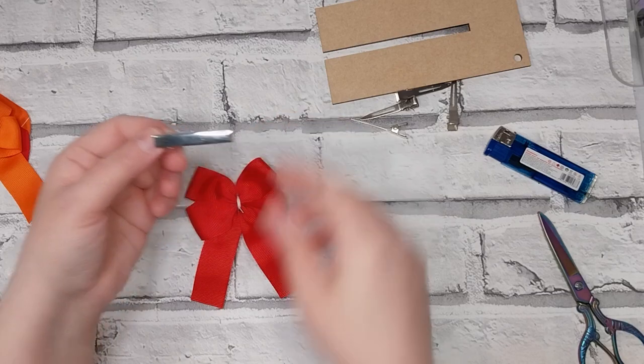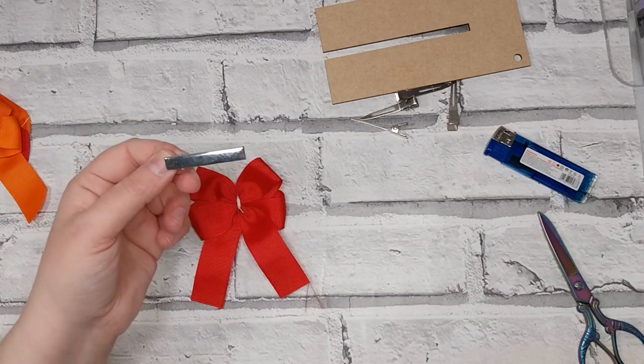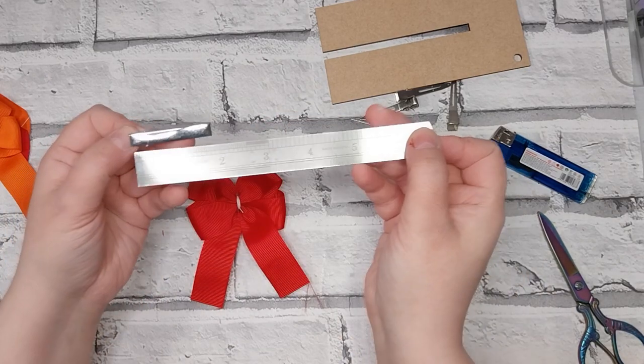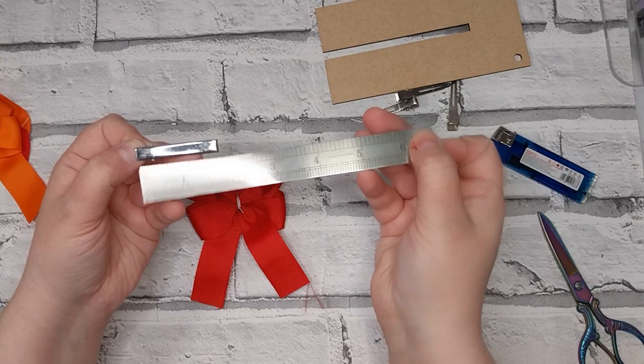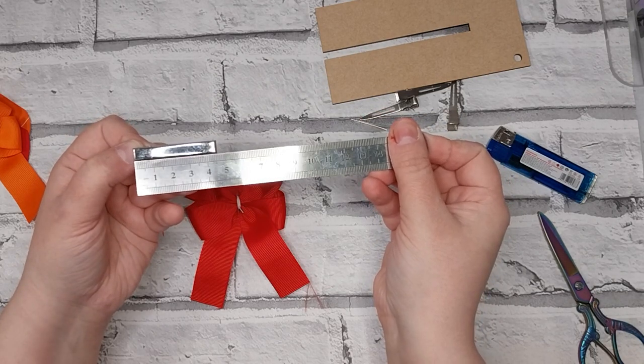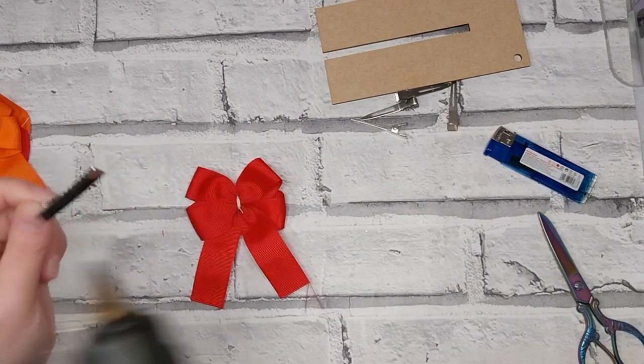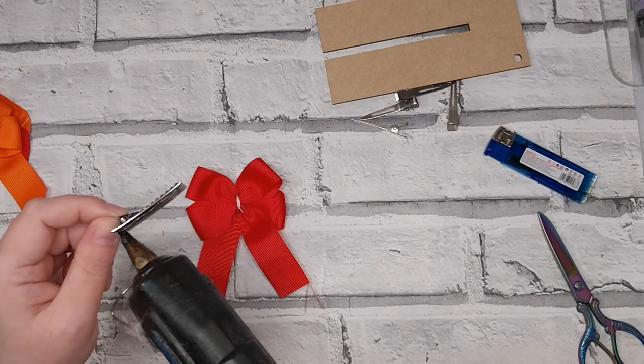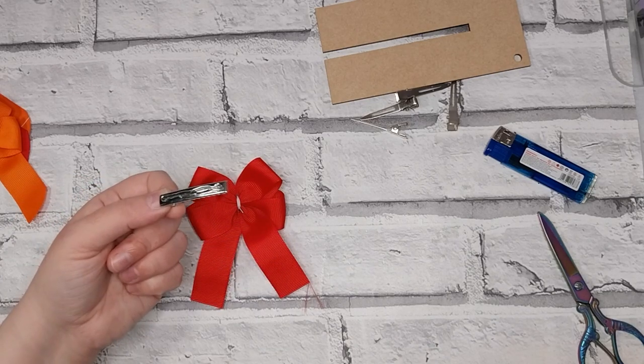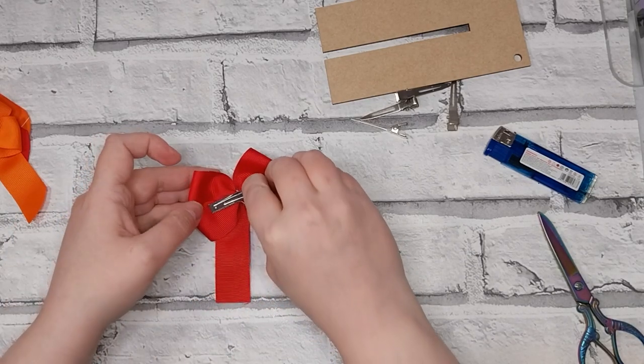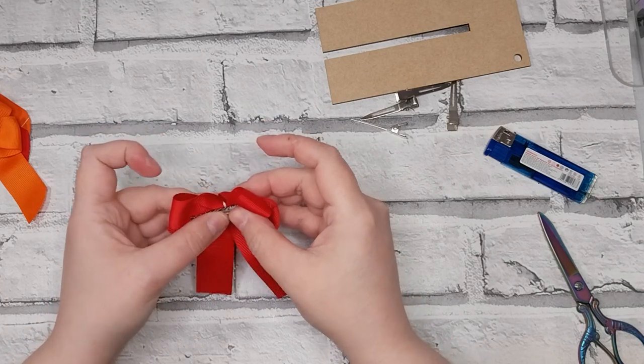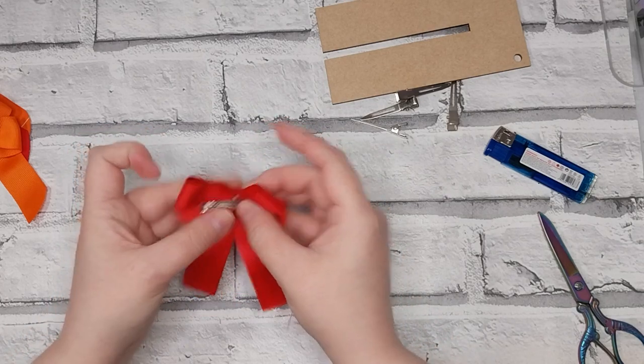We'll get this all glued and sorted out in just a second. Now I have an alligator clip and this one is one and three quarters or 45 millimeter. I don't line my clips, I just glue them onto the back of the bow like so.